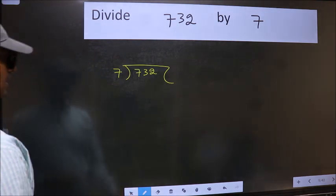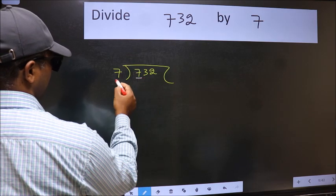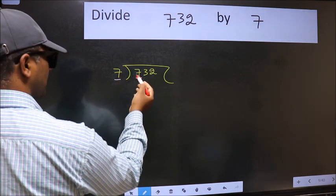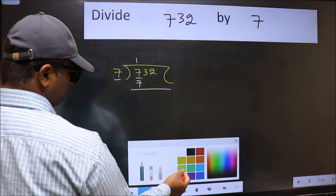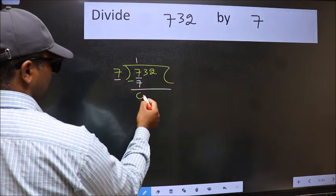Next, here we have 7 and here 7. When do we get 7 in the 7 table? 7 once 7. Now we should subtract. We get 0.